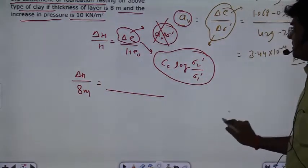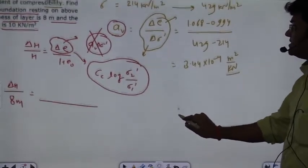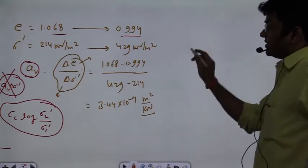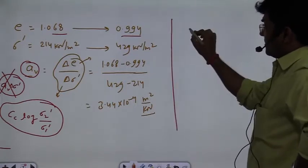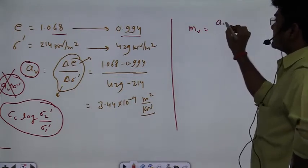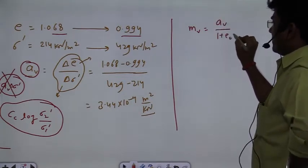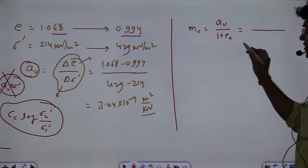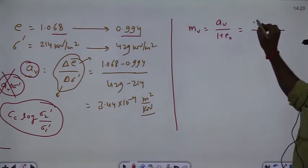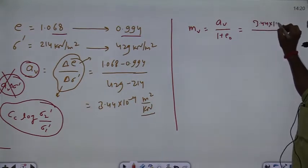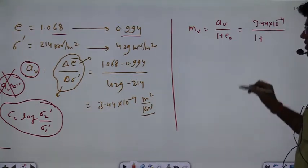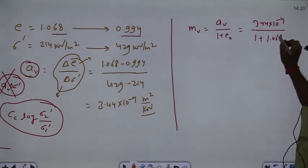In the previous question you had asked for AV to use this data. If you have asked the question of MV here, although it is not. If you have asked the definition of AV divided by 1 plus E nought, it means starting void ratio. AV is removed, that is 3.44 into 10 raised to the power minus 4 divided by 1 plus E nought, that is 1.068.